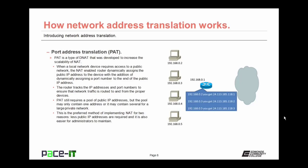PAT still requires a pool of public IP addresses, but the pool may contain only one public IP address or several for a large private network. This is the preferred method of implementing network address translation because there are fewer public IP addresses required, and it makes it easier for an administrator to maintain.